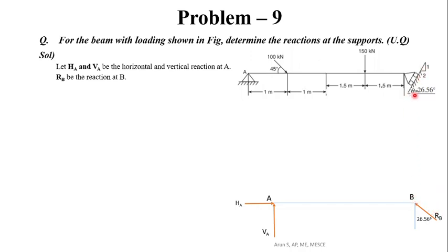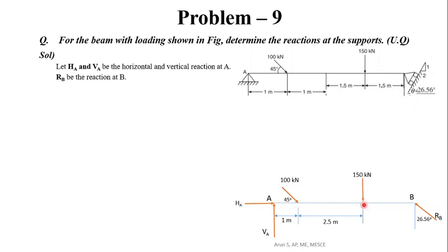This angle is 26.56 degrees. At 1 meter from A, the load is 100 kN at 45 degrees to the horizontal. At a total of 3.5 meters from A, the load is 150 kN in the vertically downward direction. Under this loading condition, we have to find the reaction at A and the reaction at B.